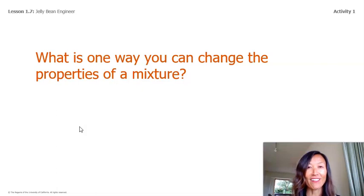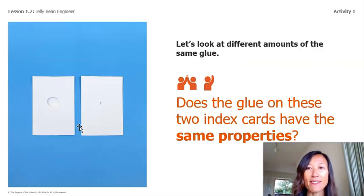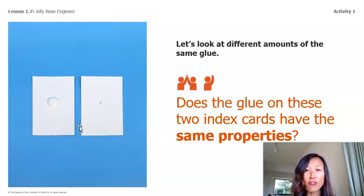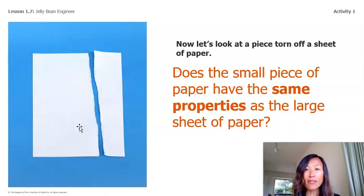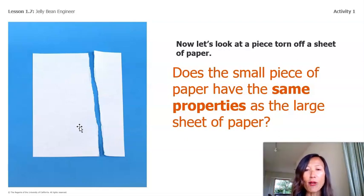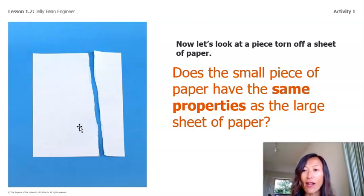Such as water. Let's look at different amounts of the same glue. Does the glue on these two index cards have the same properties? It is the same glue — the same substance — and having a small amount or large amount of glue doesn't change the properties of the glue. Now let's look at this piece of torn-off paper. Does a small piece of paper have the same properties as a large sheet? Yes, it has the same properties — it's the same substance.